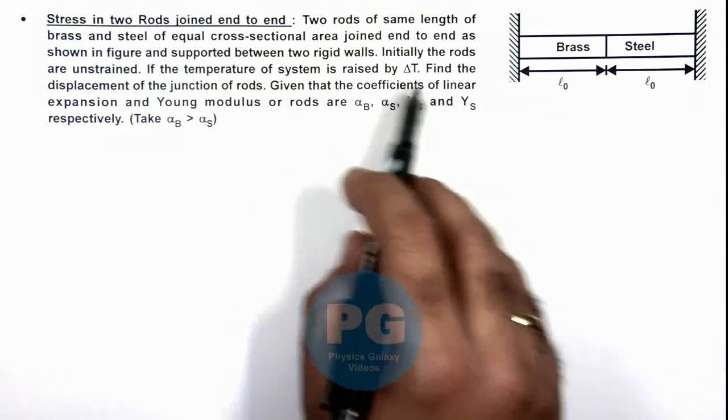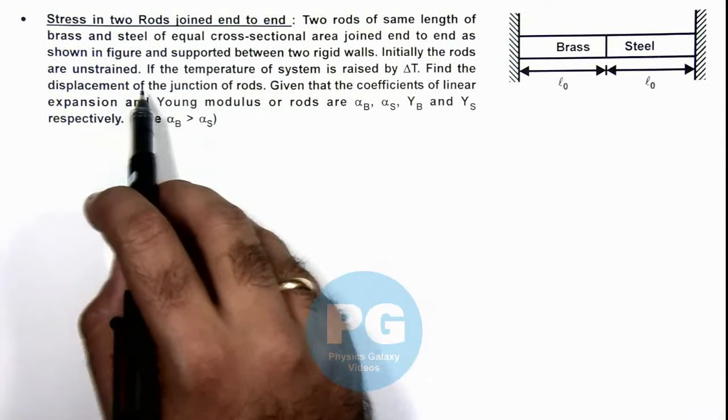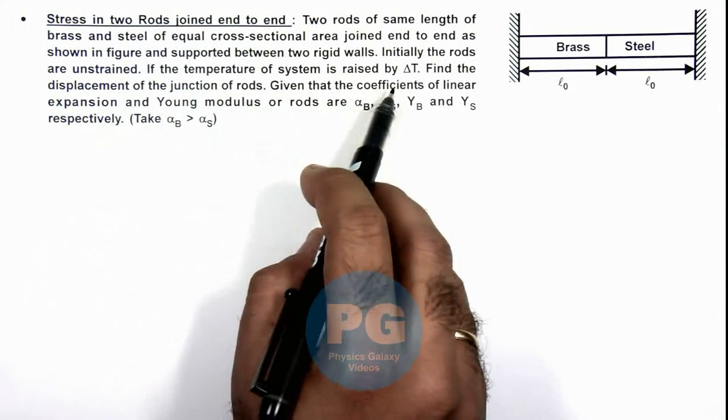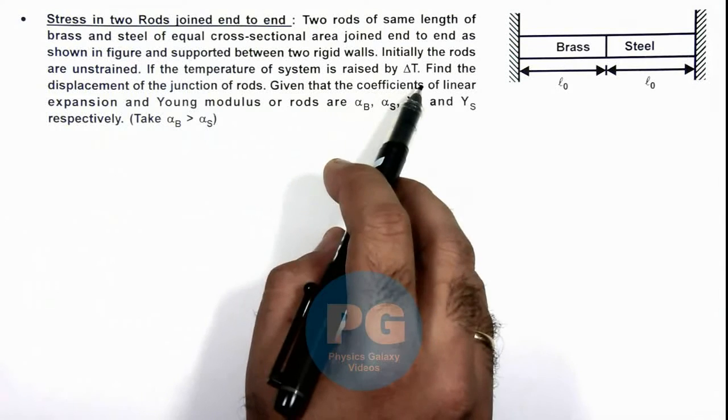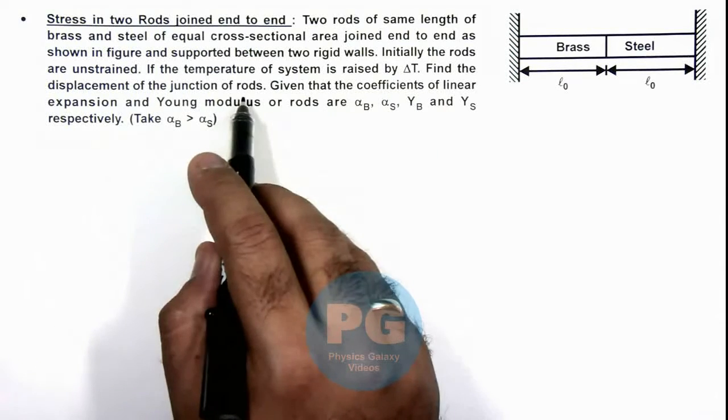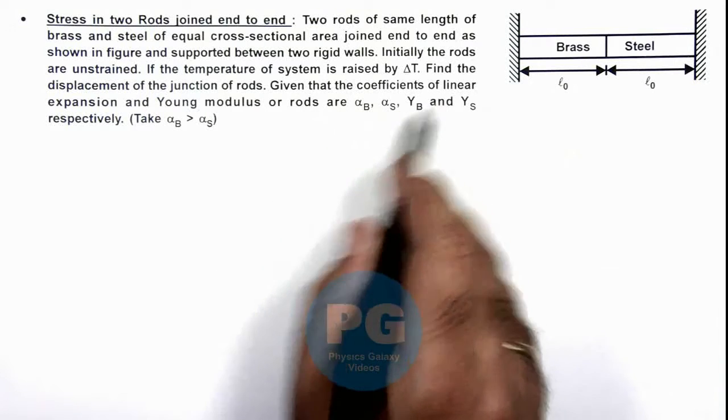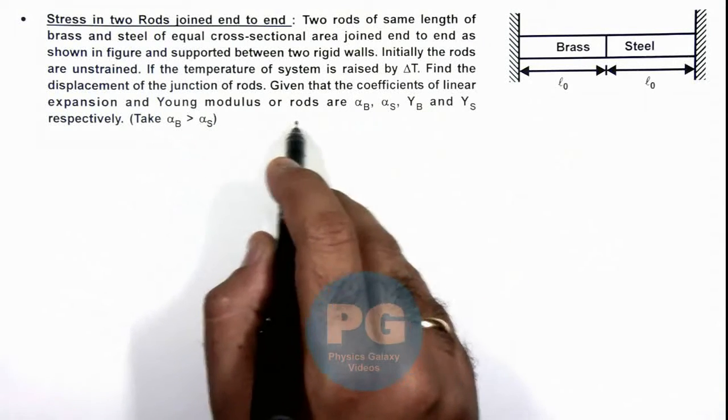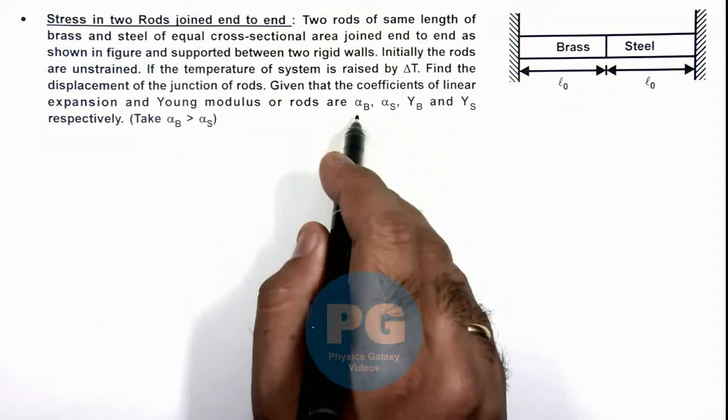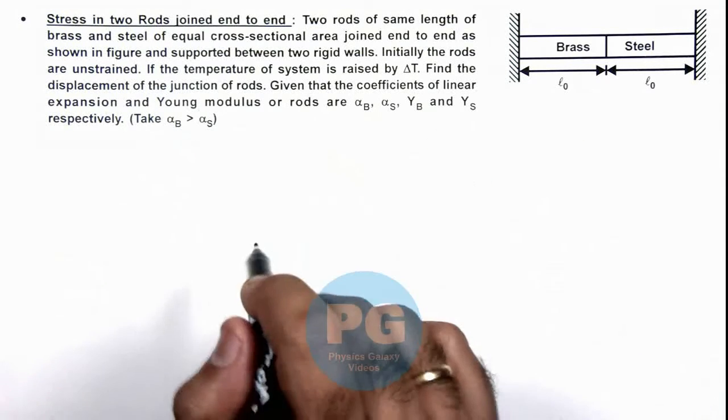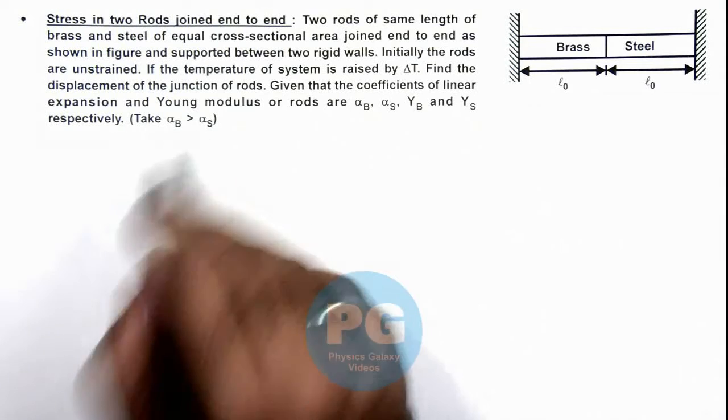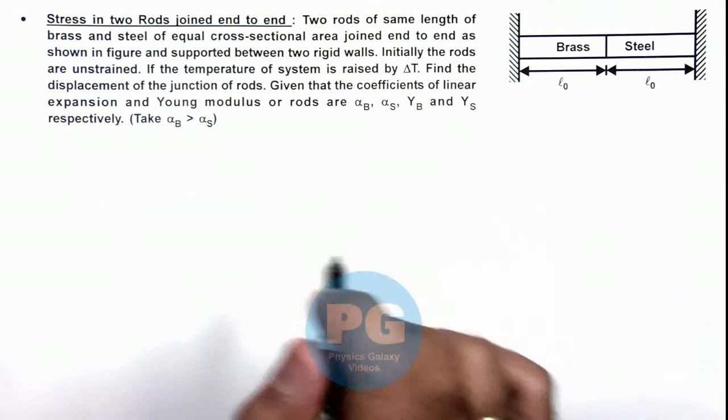Initially the rods are unstrained, and if the temperature of system is raised by ΔT, we are required to find the displacement of the junction of rods. We are given that the coefficient of linear expansions and Young's modulus of these rods as αB, αS, YB and YS, and we also need to consider that alpha of brass is more than alpha of steel.